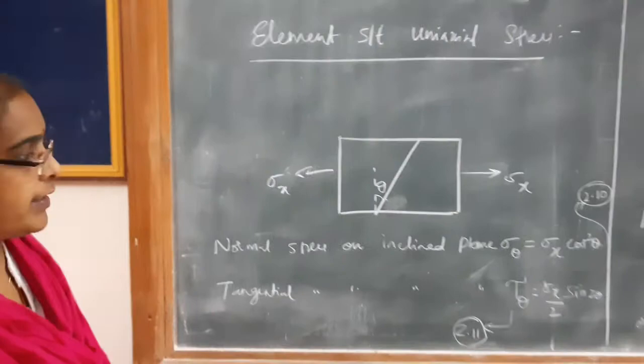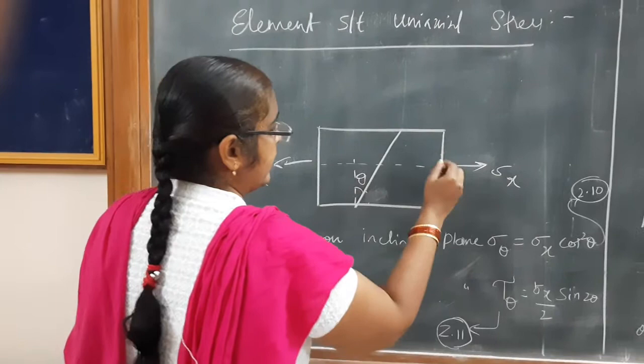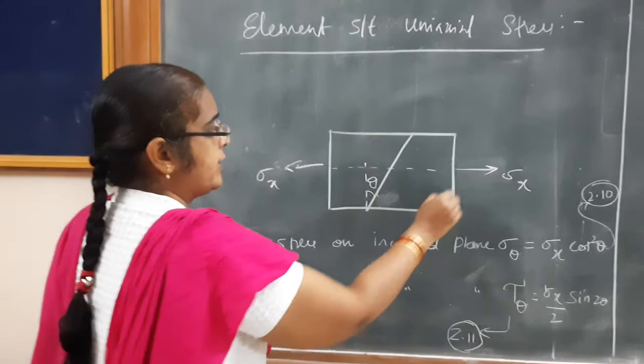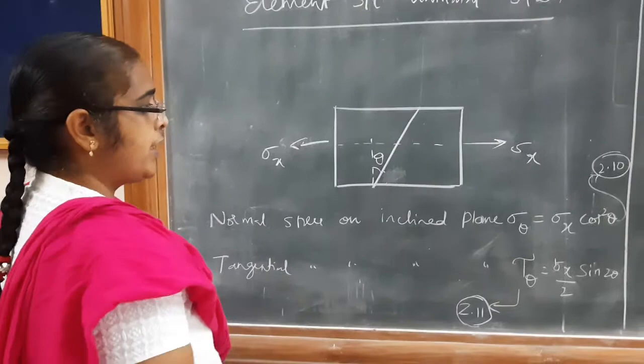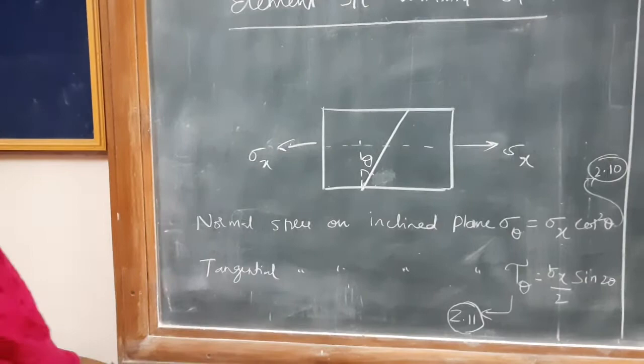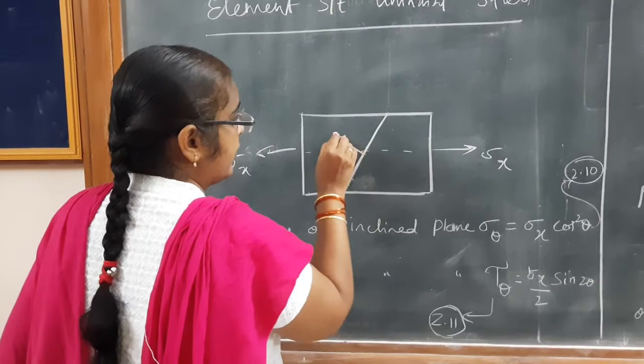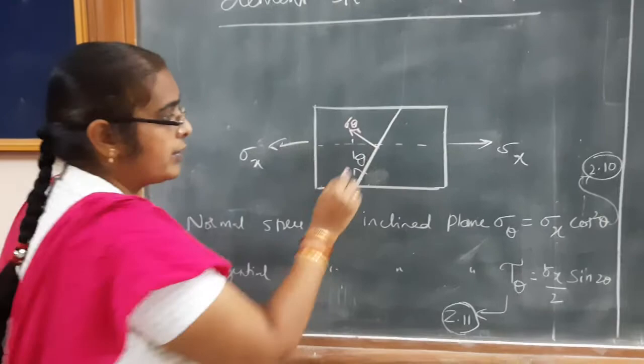Here is the element subjected to uniaxial stress — stress along only one axis. You can observe that only along the x-axis the member is subjected to stress. This is the element or member subjected to stress along only one axis. Now for this member, if we need to find the normal stress and tangential stress on an inclined plane, normal stress will be perpendicular to the inclined plane — that is known as normal stress.